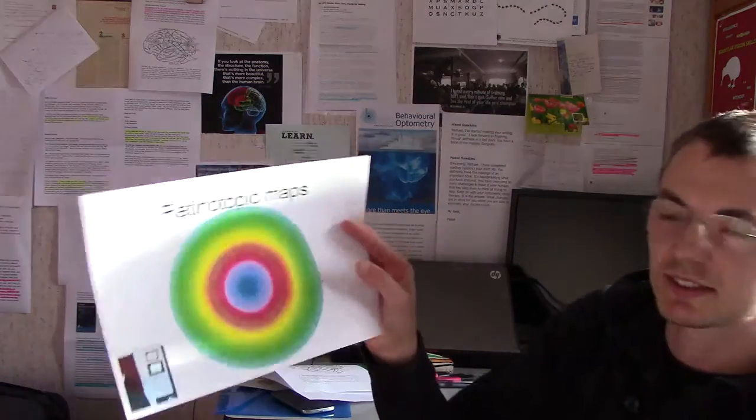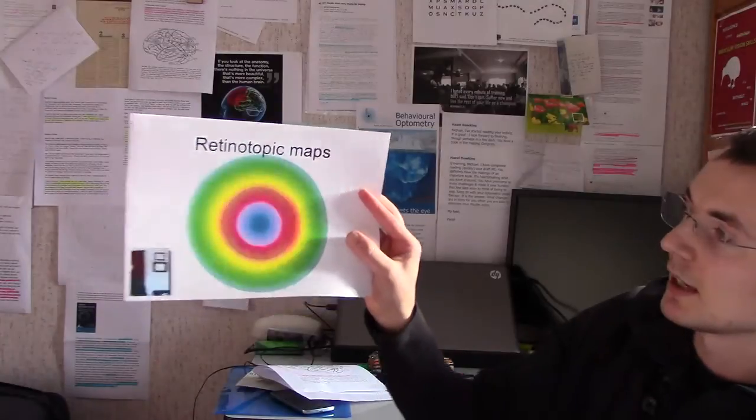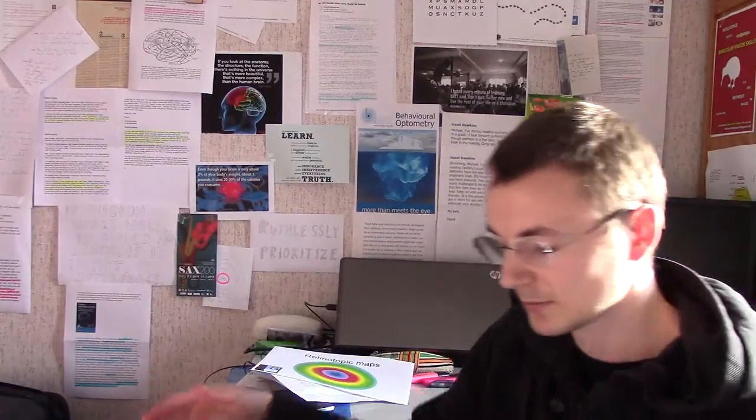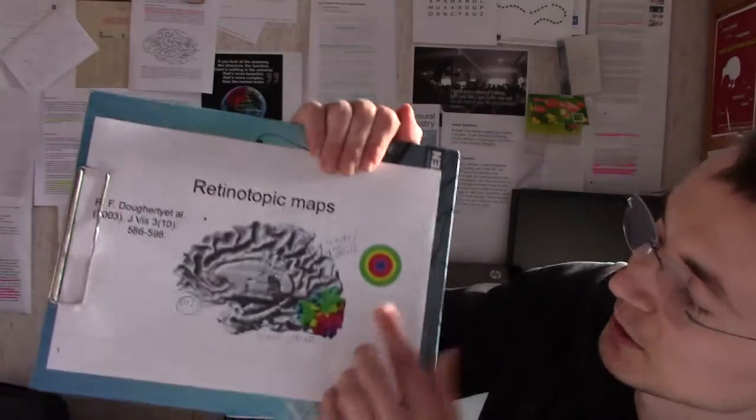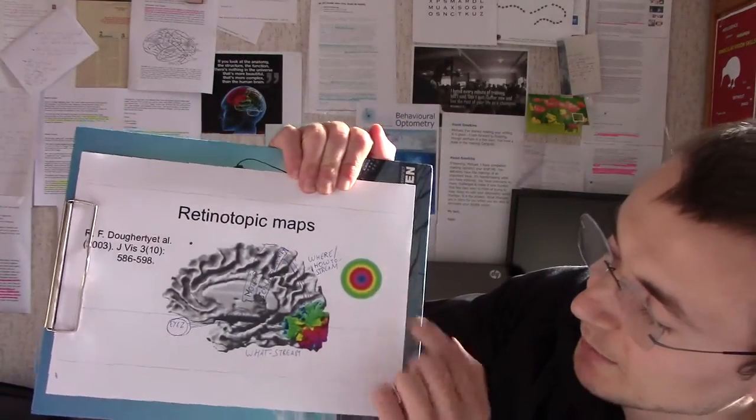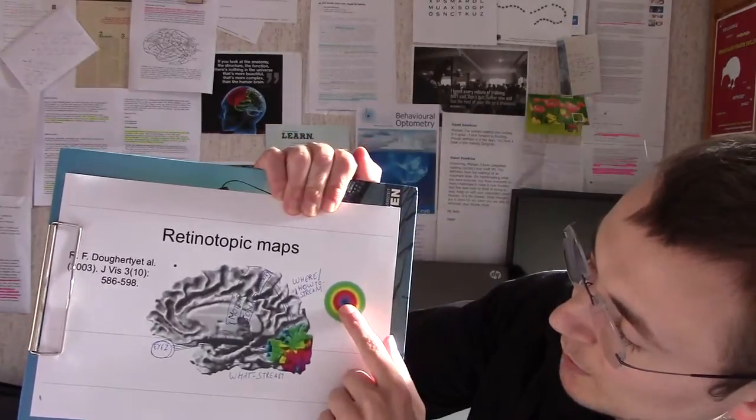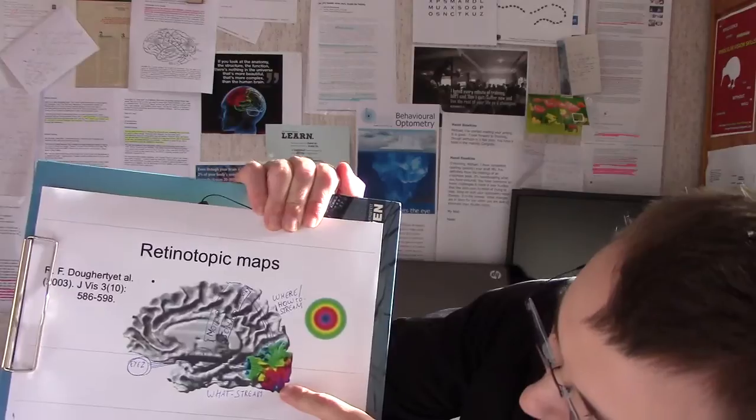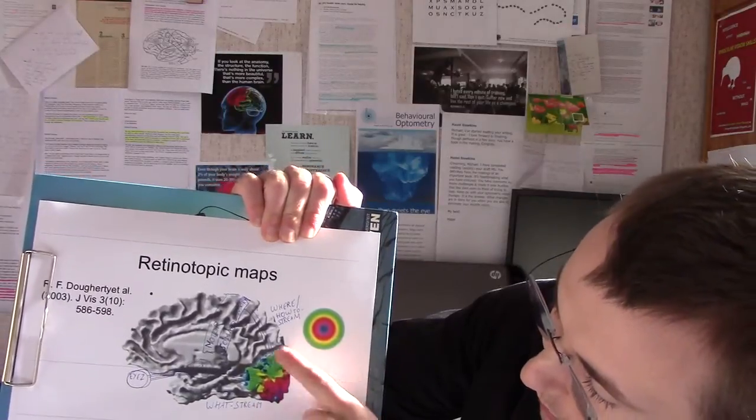If you present the eyes with this image, then the physical location of the objects you see will be represented in a specific physical location in your brain. So if your eyes watch this bullseye, then the purple element will be represented on the purple element in the visual cortex.